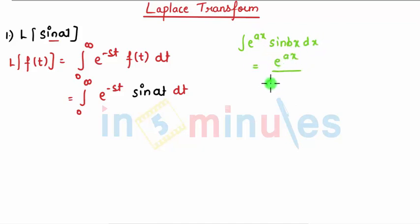ax upon a square plus b square, times a sin bx minus b cos bx.